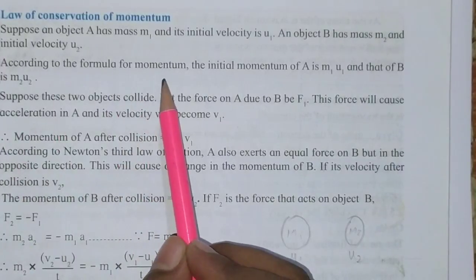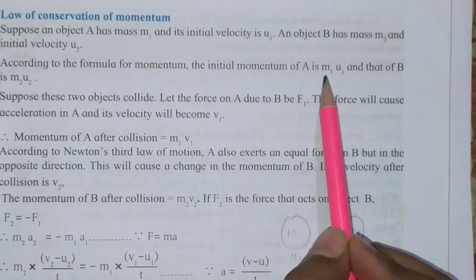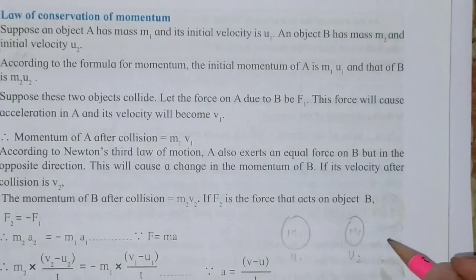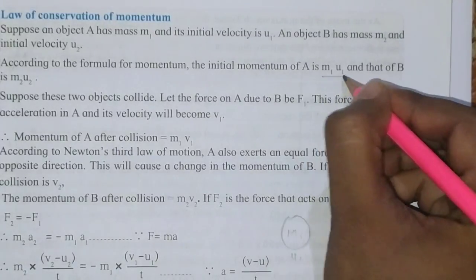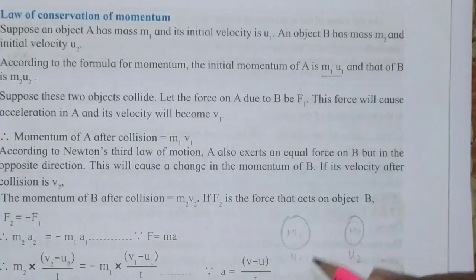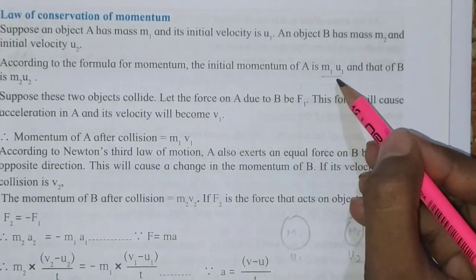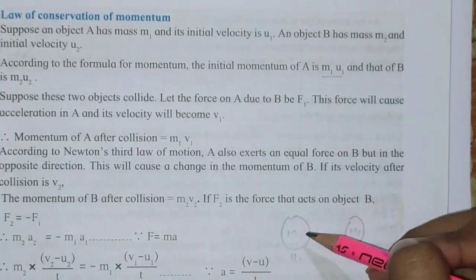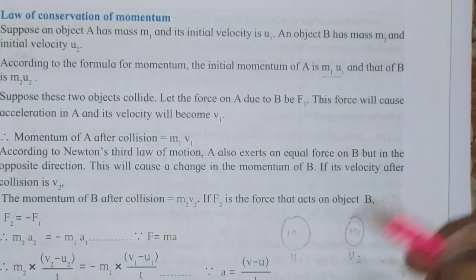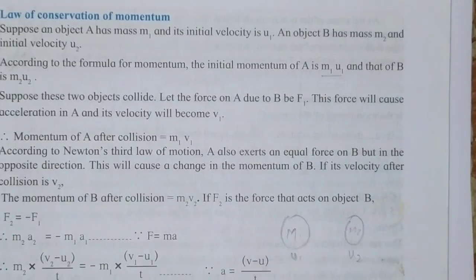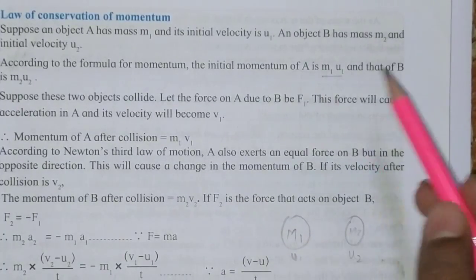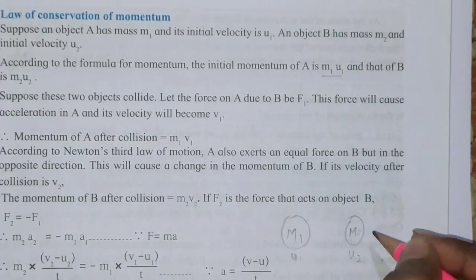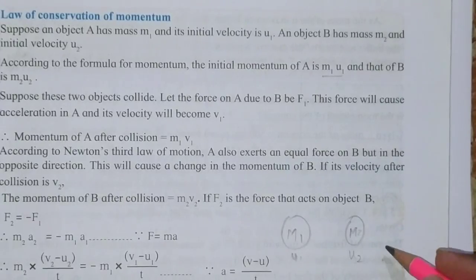According to the formula for momentum, the initial momentum of A is m1 into u1. The momentum formula is mass into velocity. So for object A, that will be m1 into u1, and for object B, the initial momentum is m2 into u2.